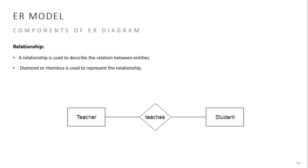Now we have entities and attributes. We also have relationships. A relationship is represented by a rhombus or diamond shape in the ER diagram. For example, a teacher and a student have a relationship, or a student has a laptop — that is also a relationship.